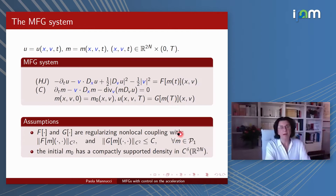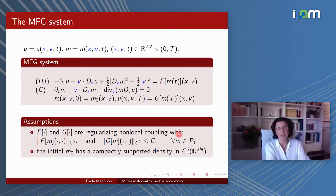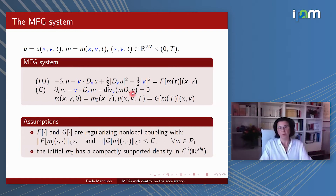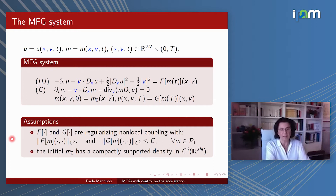We are now ready to write the mean field game system. I write in blue the state variable (X, V) to better understand the dependence and the type of degeneration. The first equation is the Hamilton-Jacobi equation. The second is the continuity equation. Note that the drift term in the continuity equation contains as a first component the second component of the state variable V, and here we have a gradient with respect to V of U.